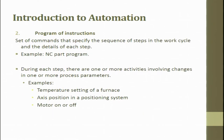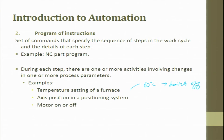A program of instructions is a set of commands that specify the sequence of steps in the work cycle and the details of each step. For example, in an NC part program, every line is called a block. Instructions include things like temperature settings for a furnace, axis positioning, and motor on/off commands.